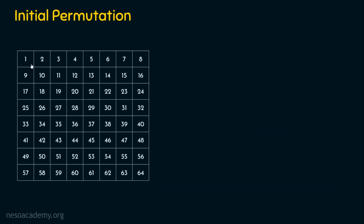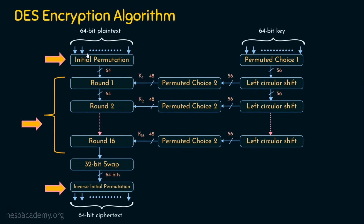The initial permutation takes 64-bit plaintext, changes the position of the bits, and gives 64-bit output. If we take the plaintext which is of 64 bits, ordered with the first bit, second bit, third bit, fourth bit, and so on, obviously the last bit will be the 64th bit. The input is converted into binary bits, and the 64-bit binary bits are placed accordingly. This initial permutation function takes 64 bits input and converts it into 64-bit output — what is actually happening is that the position of the bits are changed.